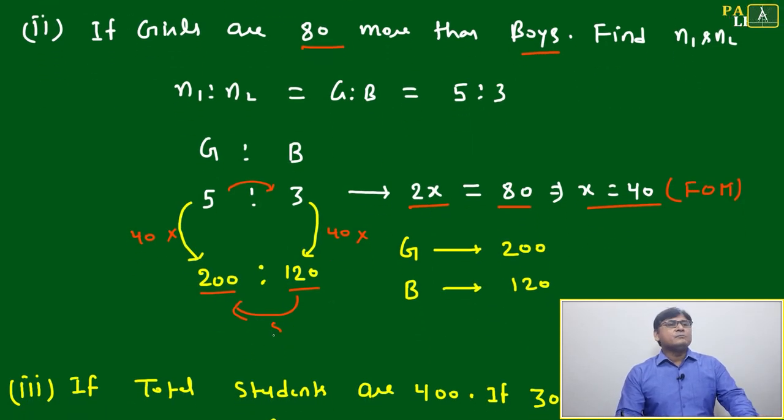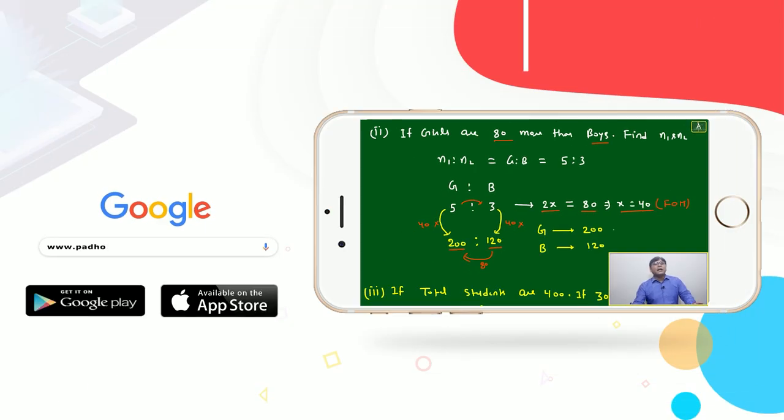Check here: girls are 80 more than boys. Girls are 200 and boys are 120. Once you multiply by the multiplication factor, you get 200, and it justifies the given condition that girls are 80 more than boys.